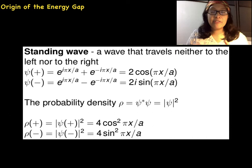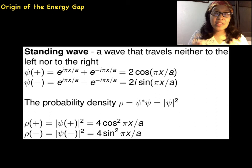If you got a wave that travels neither to the left nor to the right, what do you have? That's right, a standing wave. We can form two standing waves from two traveling waves. Namely, ψ₊ equals 2 cosine of πx over a and ψ₋ equals 2i sine of πx over a.